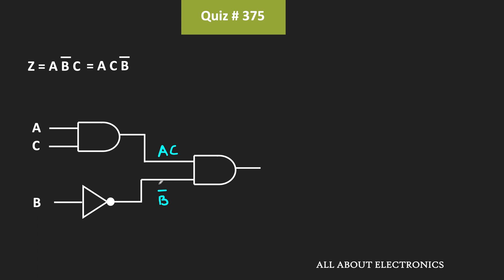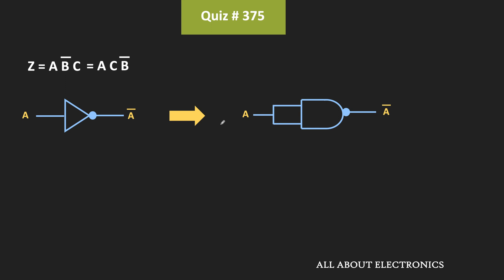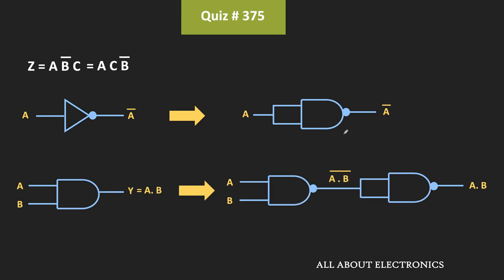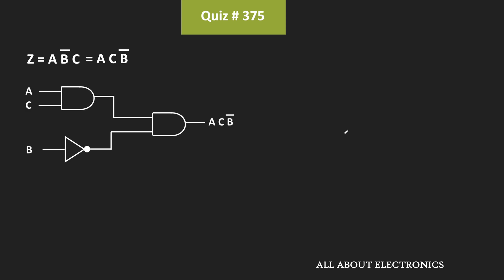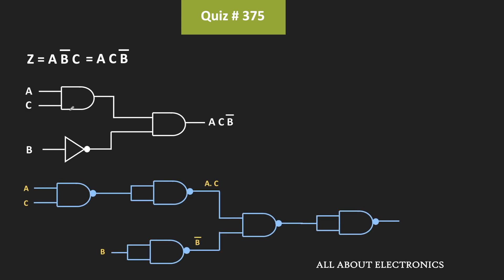Now, if we want to implement the same thing using two-input NAND gates, we can replace each logic gate with its equivalent NAND implementation. By connecting both inputs of a NAND gate together, it acts as an inverter, and two NAND gates can implement an AND gate. So let us replace each logic gate with the corresponding NAND implementation. This AND gate is replaced with two NAND gates, while this inverter is replaced by one NAND gate.